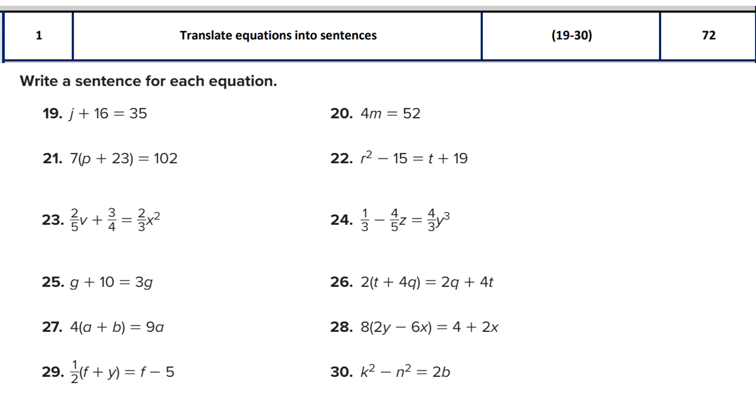When you have to write a sentence for an equation, you have to look out for certain things. For example, you have to look out for mathematical symbols like addition, subtraction, division, and multiplication. We are going to use all of these mathematical symbols and these are all equations. Equations means they have an equal sign. As you see there is a left hand side and a right hand side, and accordingly we are now going to convert or translate these equations into sentences.